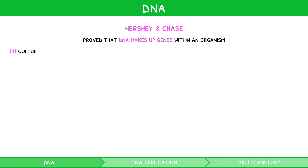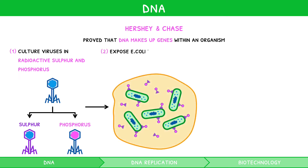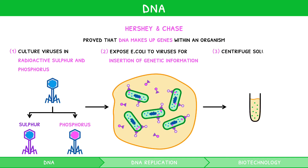They then cultured these viruses in radioactive sulfur and radioactive phosphorus, so that the sulfur would integrate into the protein, and phosphorus into the DNA. They then exposed E. coli to these viruses, so that they would insert their genetic information into the E. coli. They then agitated and centrifuged the resulting solution to separate the bacteria from the viruses, and tested both for radioactivity with a Geiger counter.